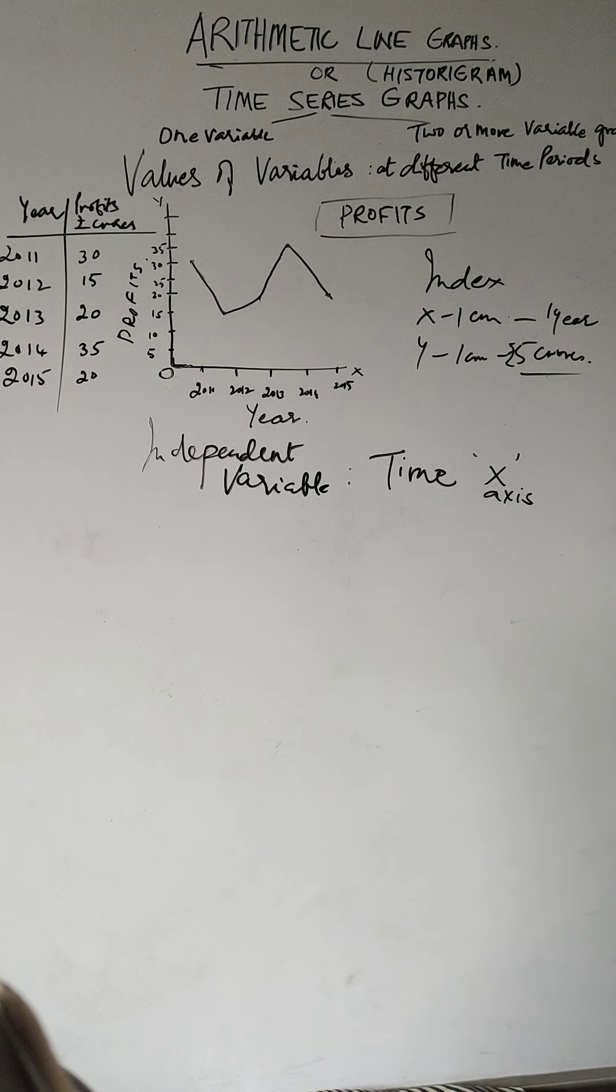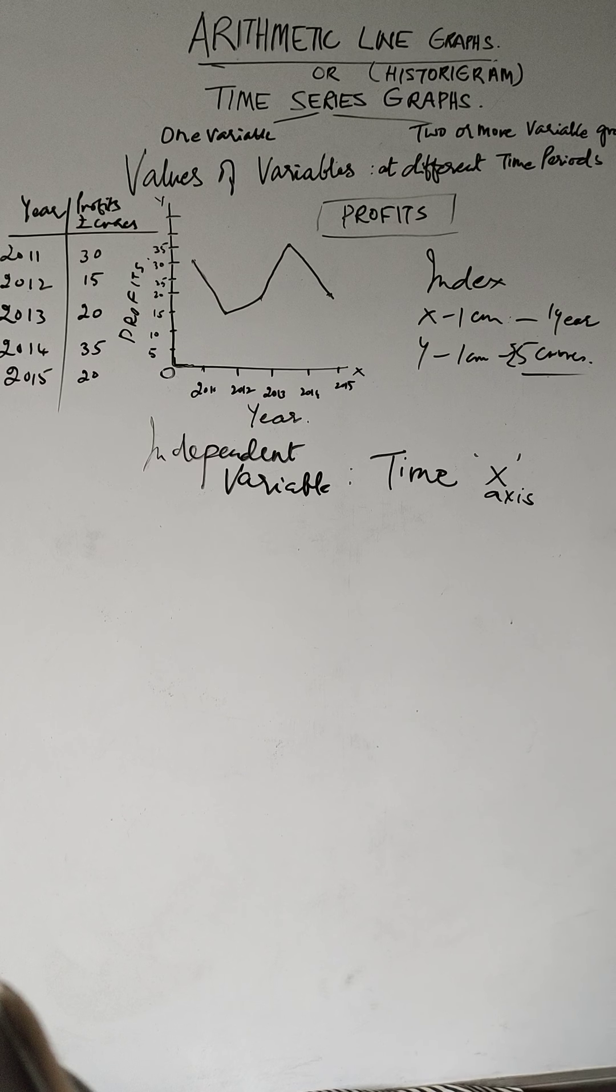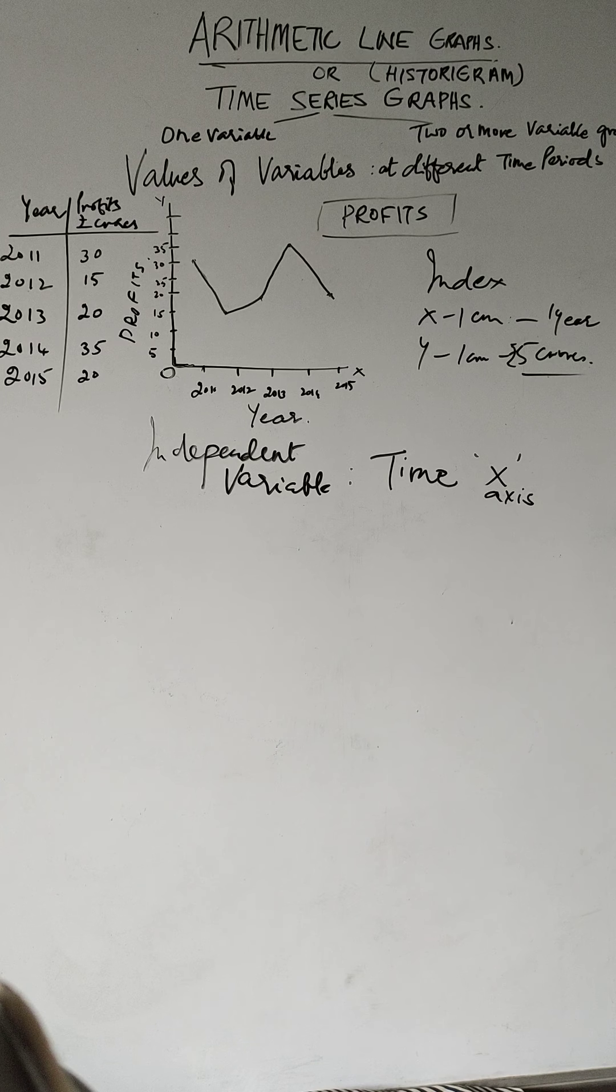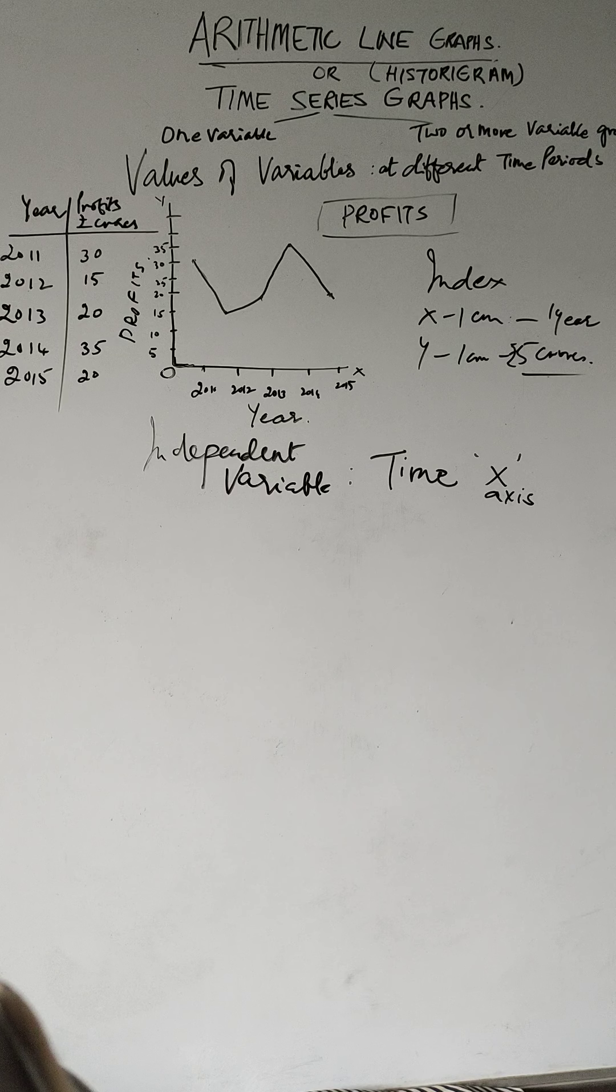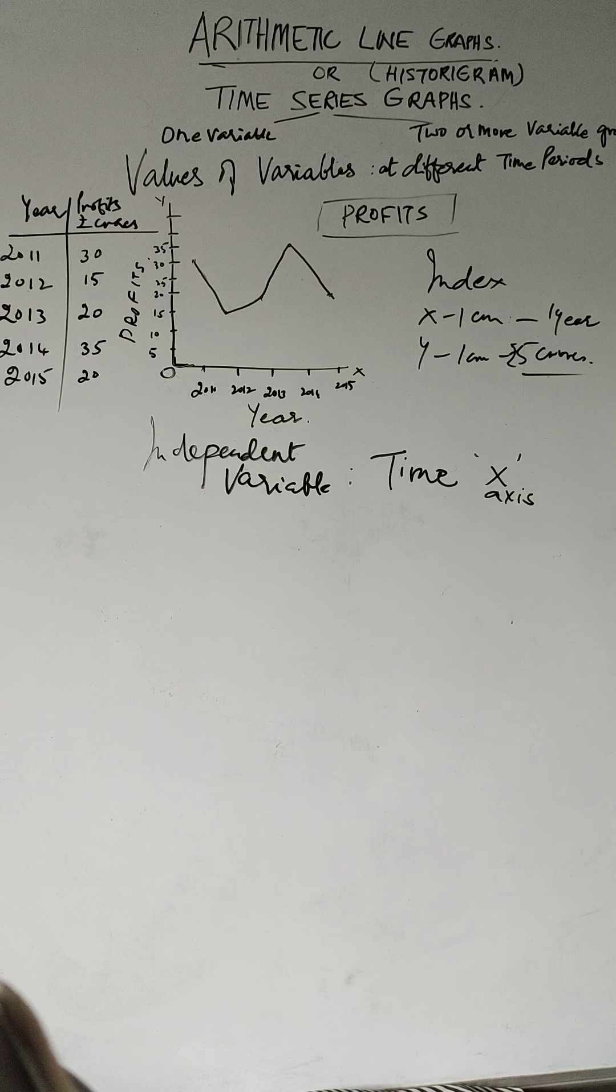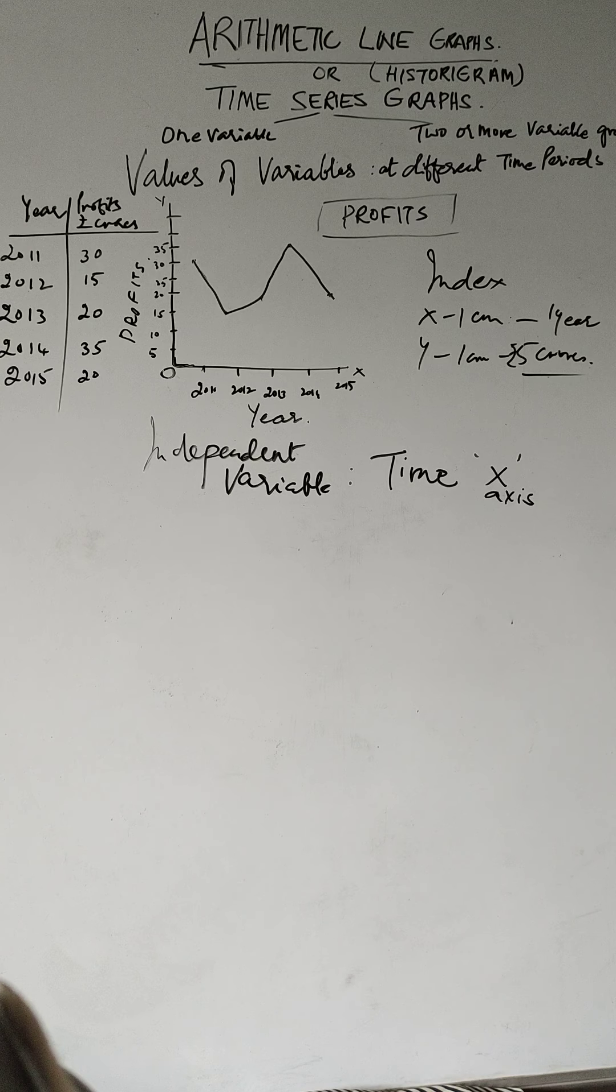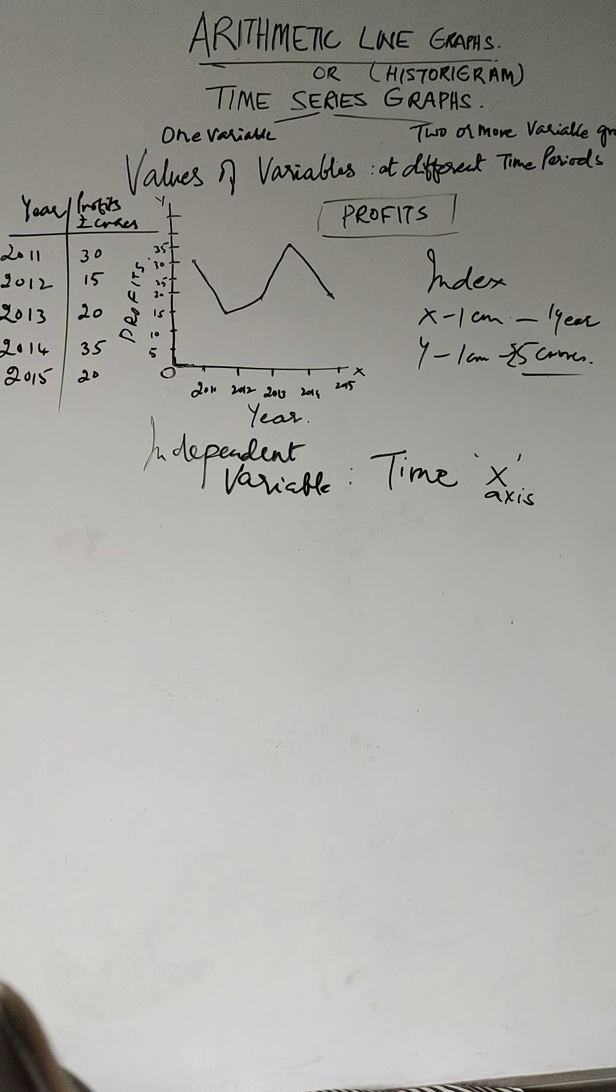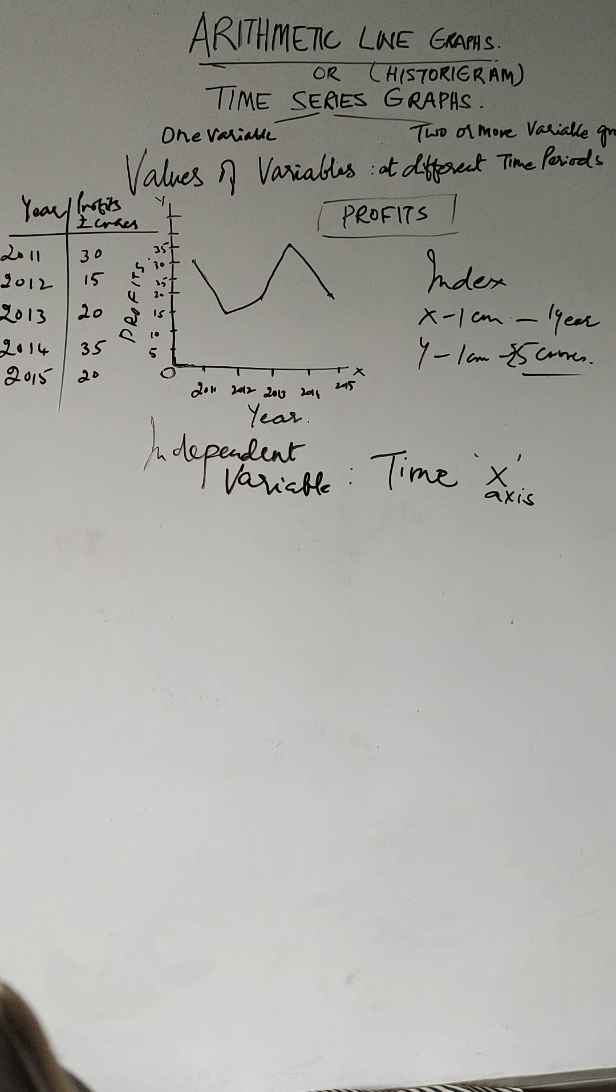These are the one variable graphs. What does a one variable graph mean? It shows changes in a single variable over a period of time. Time is measured along the x-axis, whereas the value of the variables are plotted on the y-axis. Then you put the dots as I showed you, with reference to its value, whatever they obtain.